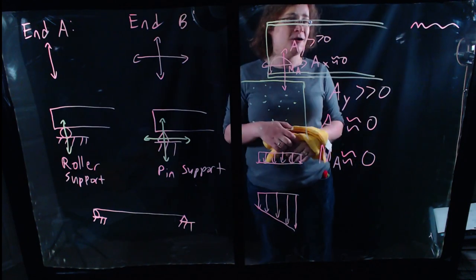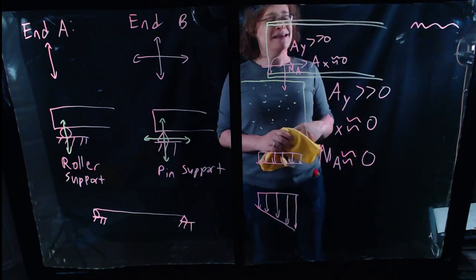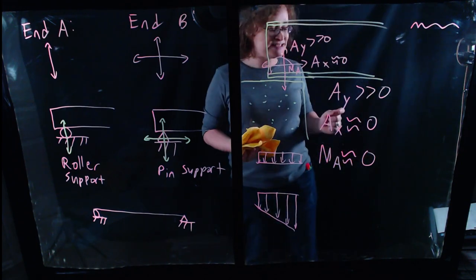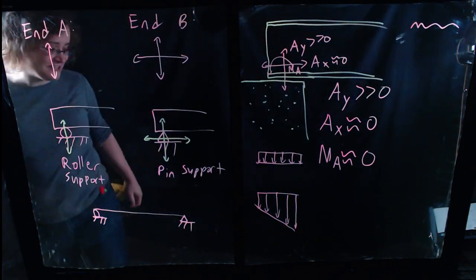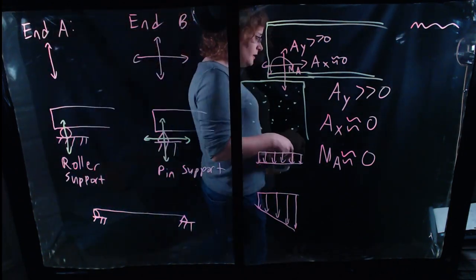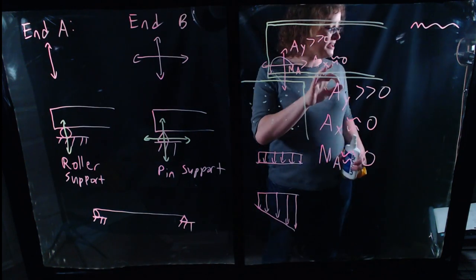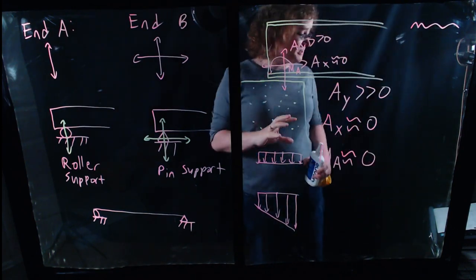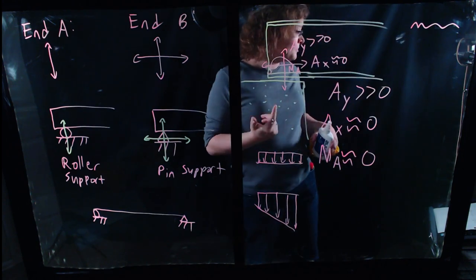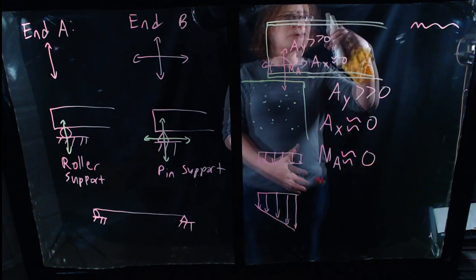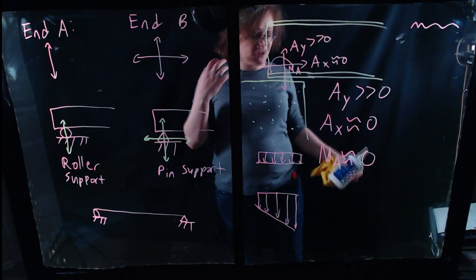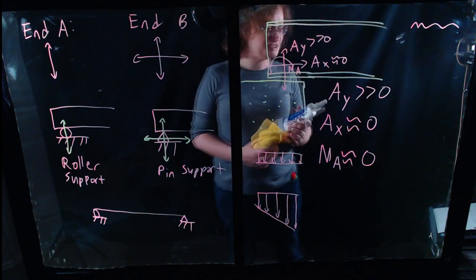No engineering model is perfect. We are making certain educated approximations, but we need to do that in order to work effectively. The whole idea of an engineering model is that the real world is incredibly complex — real structures are incredibly complex — and it is not physically possible to model them to perfect precision. There are always going to be some unknown variables. Unless you have the ability to literally model a structure one atom at a time with some impossibly powerful supercomputer, you're always going to need to make some approximations in your structural analysis.